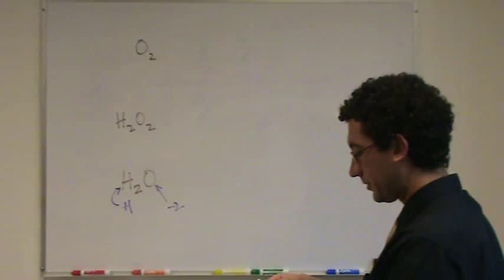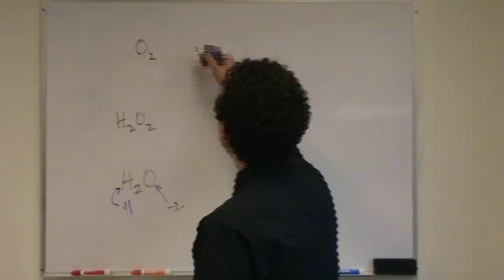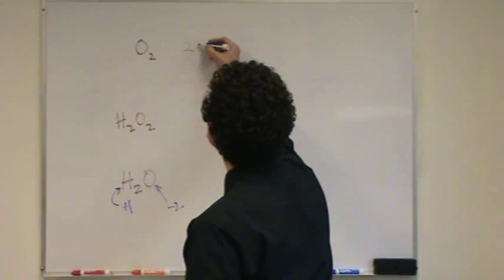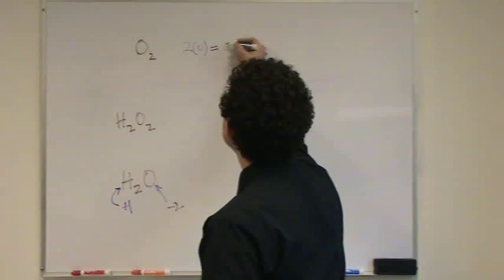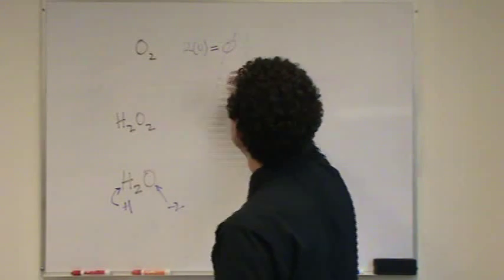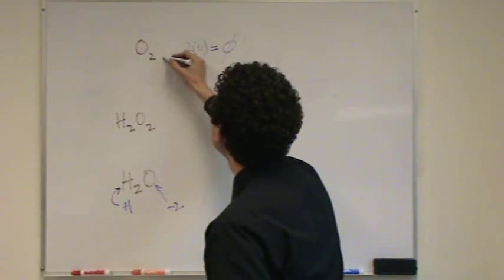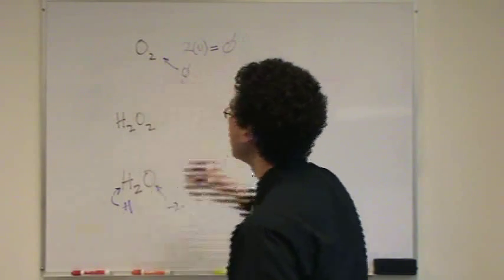Up at the top, you would say, well, there's 2 oxygens, and 2 times oxygen equals the overall charge of 0. So that must mean oxygen has a 0 charge.